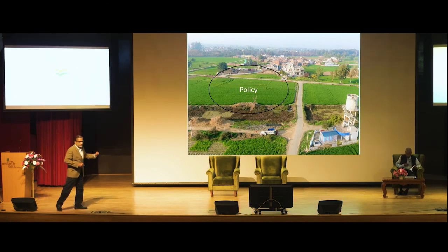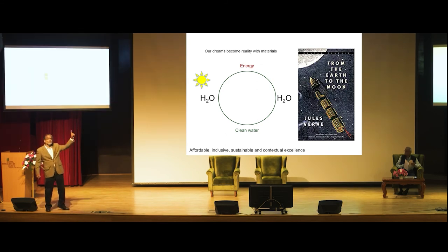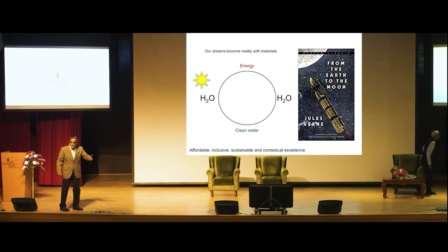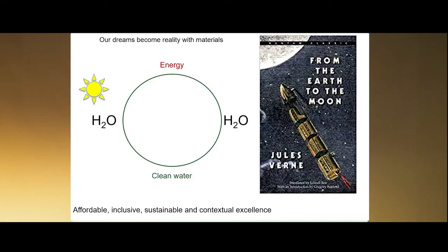Let me close with one vision: our dreams become reality with materials. Look at this book from 1865 — Jules Verne talked about sending a rocket to the moon. The material he chose was aluminum, which had just been discovered; aluminum's first industrial production started only in 1879. Yet look at what aluminum has accomplished since then.